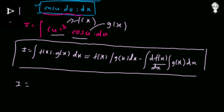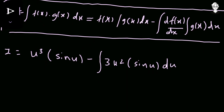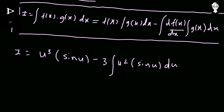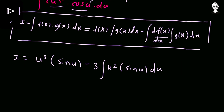Applying the formula: I equals u³ times the integral of cos u — which is sin u — minus the integral of the derivative of u³, which is 3u², times sin u du. We can take 3 outside the integral, giving minus 3 times the integral of u² sin u du. This integral again has two functions in a product, so we apply the same formula again.